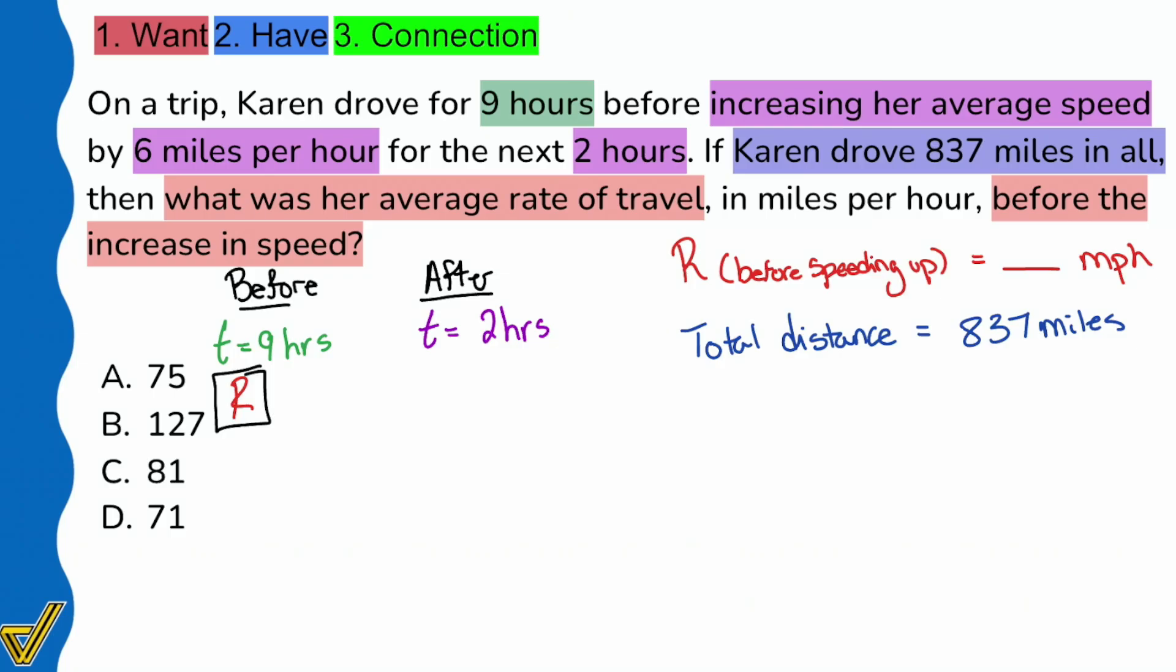If we increased by six miles an hour, the new rate is going to be our previous rate increased by six miles an hour, so R plus six. It's that simple. We can talk about it in that way. Remember the variable is just a placeholder for a number we just don't know yet, but we can talk about it like a number.